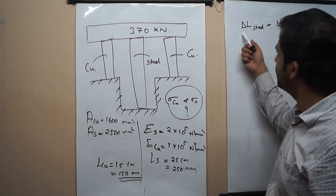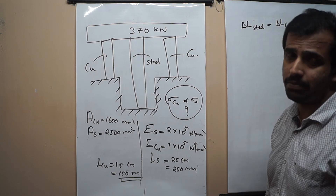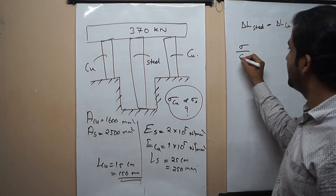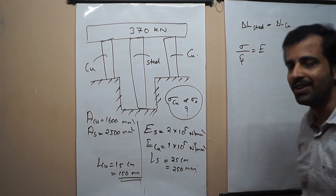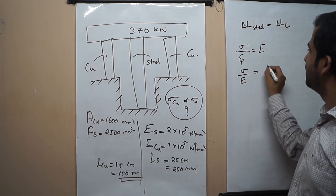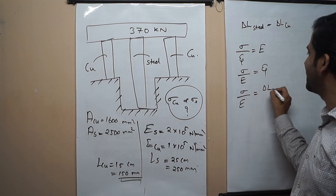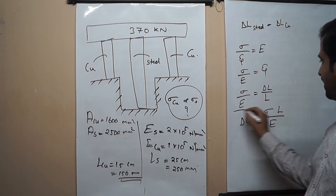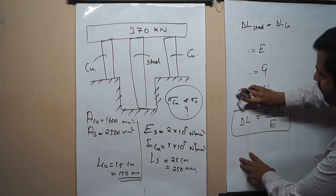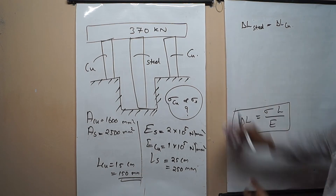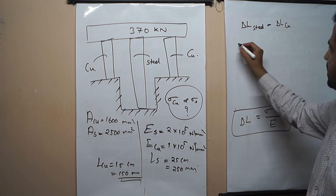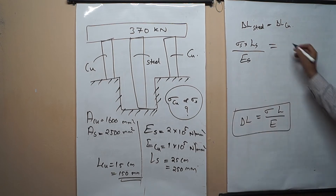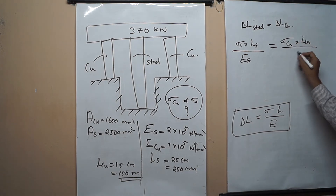Now we substitute for delta L using Hooke's law. Stress is directly proportional to strain, so stress divided by strain equals the elastic modulus E. From this, sigma divided by E equals delta L divided by L, giving us delta L equals sigma times L divided by E. Applying this: sigma_steel times L_steel divided by E_steel equals sigma_copper times L_copper divided by E_copper.